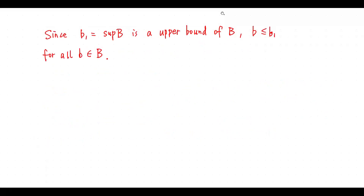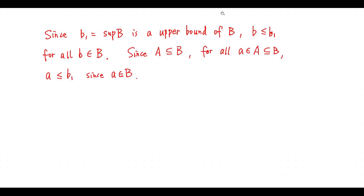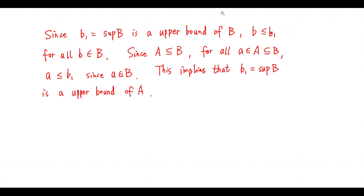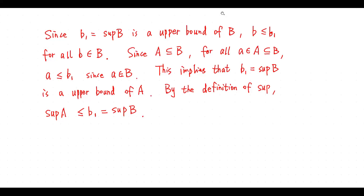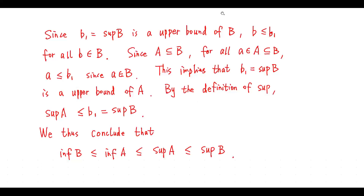Let B₁ equal supremum B. Since B₁ is an upper bound of B, b is less than or equal to B₁ for all elements b in the set B. Since A is contained in B, for all elements a in the set A, a is less than or equal to B₁. This implies B₁ is an upper bound of A. By definition of supremum, supremum A is less than or equal to B₁. We thus conclude: infimum B ≤ infimum A ≤ supremum A ≤ supremum B.